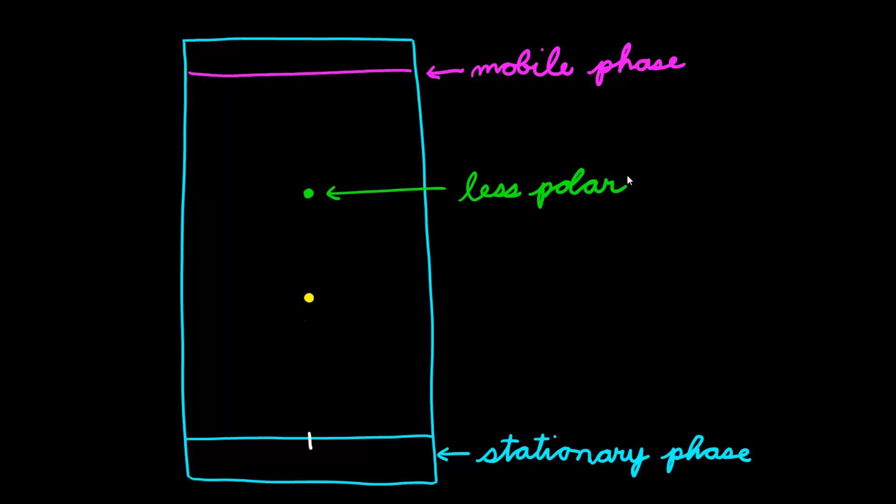However, in the case of the yellow spot, this is more polar because it was more adherent to the stationary phase and less attracted to the mobile phase.